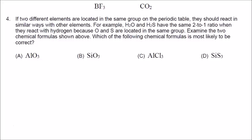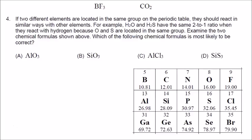Examining the two chemical formulas shown: we have boron, carbon, nitrogen, oxygen, and fluorine, and elements below them. BF₃ contains one atom of boron and three atoms of fluorine. We can replace either element with another from the same vertical column — the same group or family. So besides BF₃, acceptable formulas include AlF₃, GaF₃, BCl₃, or BBr₃. We can also replace both elements, so AlCl₃ is valid — replacing boron with aluminum and fluorine with chlorine, maintaining the same one-to-three ratio.